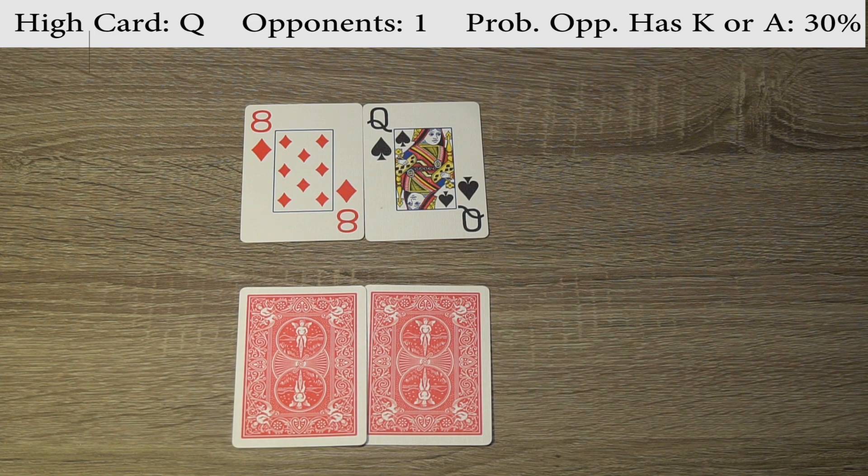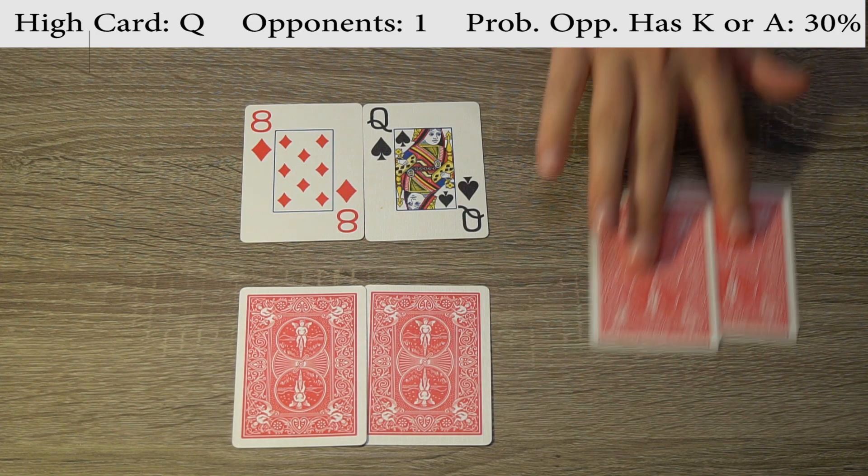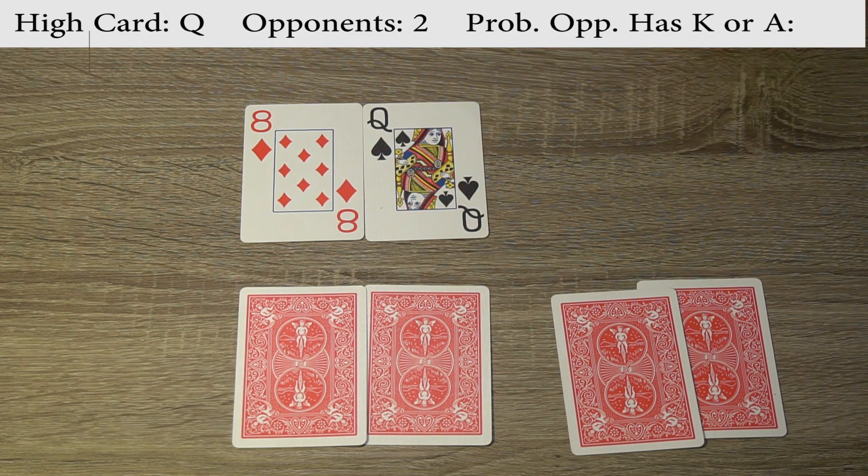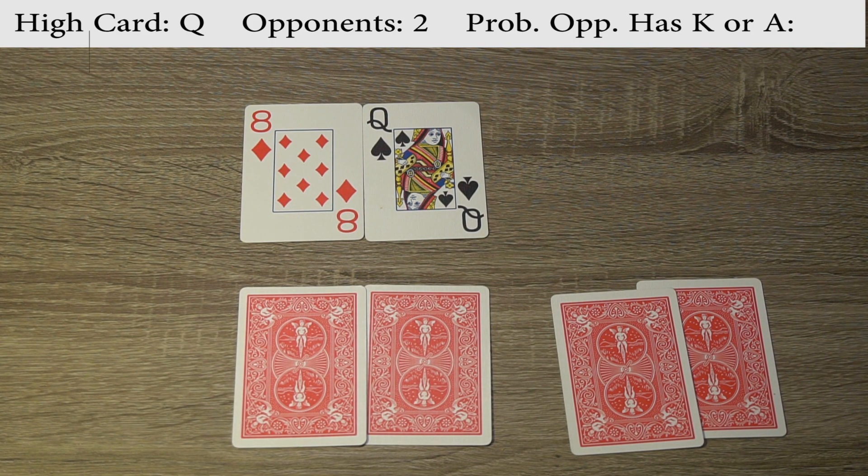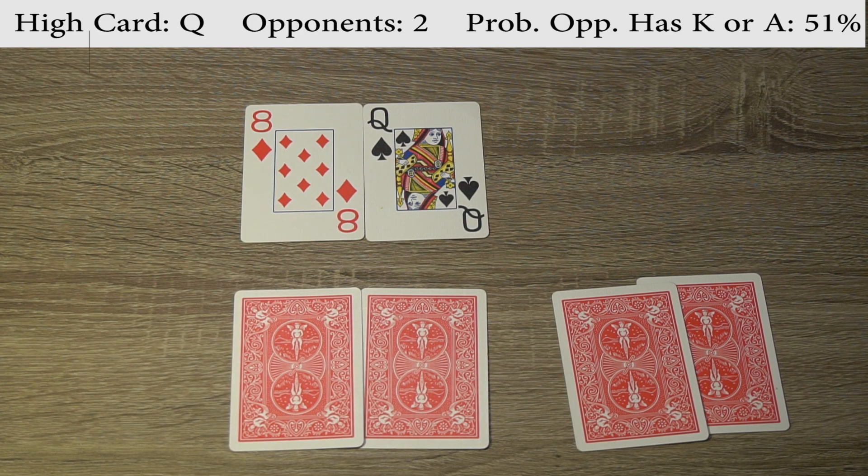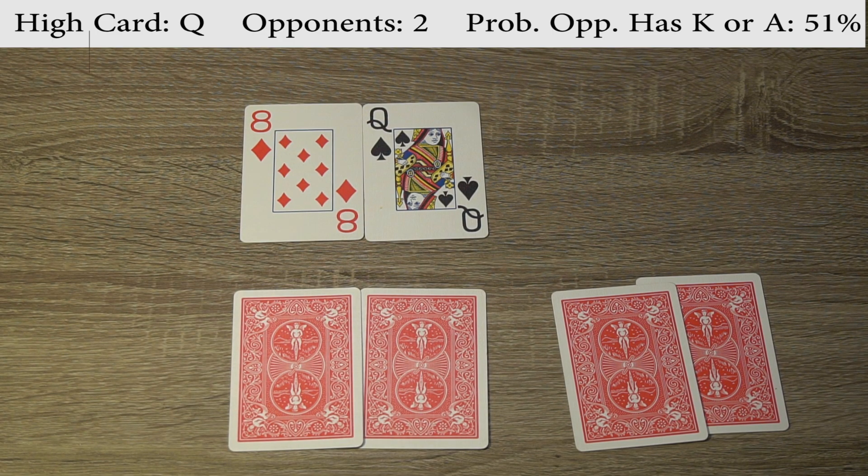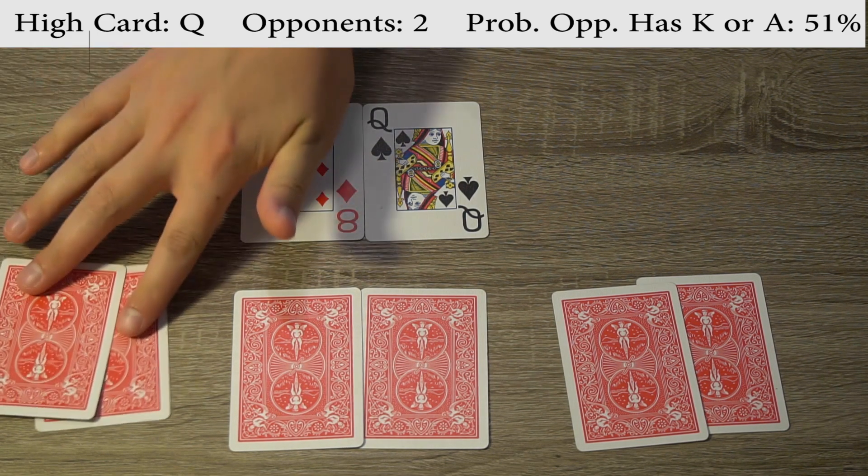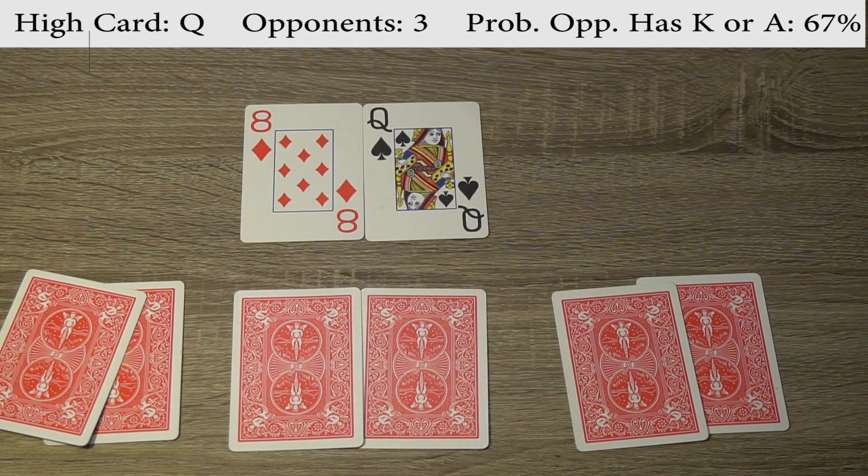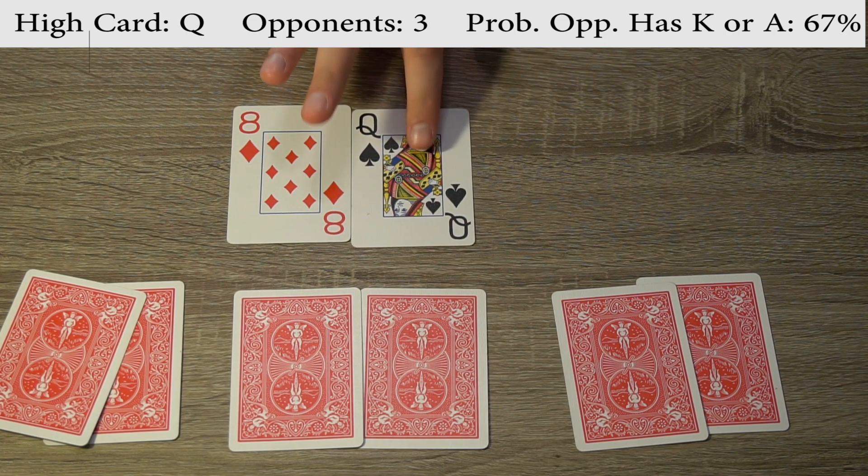Let's see how that number changes when we add in more opponents. So now that we have two opponents, the chance that one of these four cards is a king or an ace is a little over 50%, about 51% of the time. That is with three total people in the game, you're playing against two other people. If we increase that number even farther, and we say that we're now playing against three opponents, that number shoots up to 67% of the time one of these six cards will be a king or an ace. And so this queen will not be the highest card.